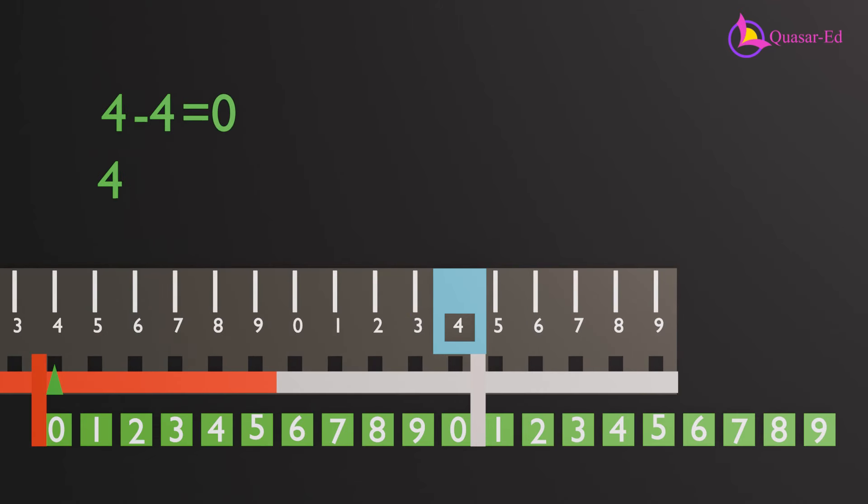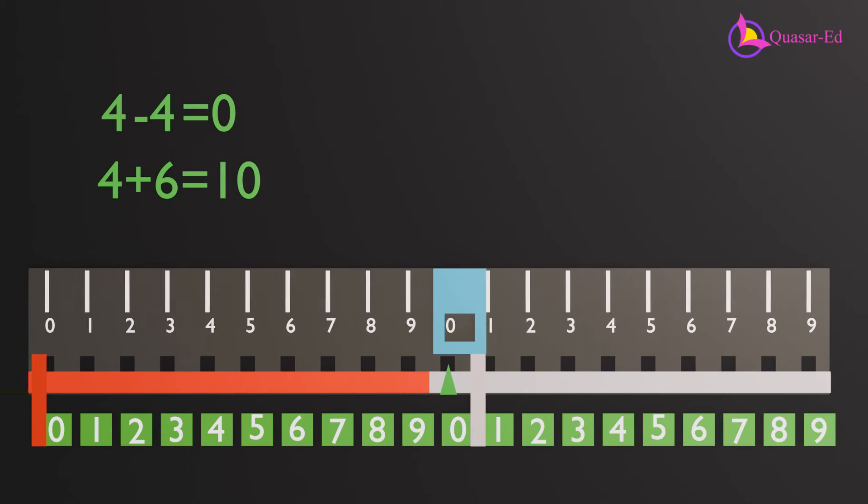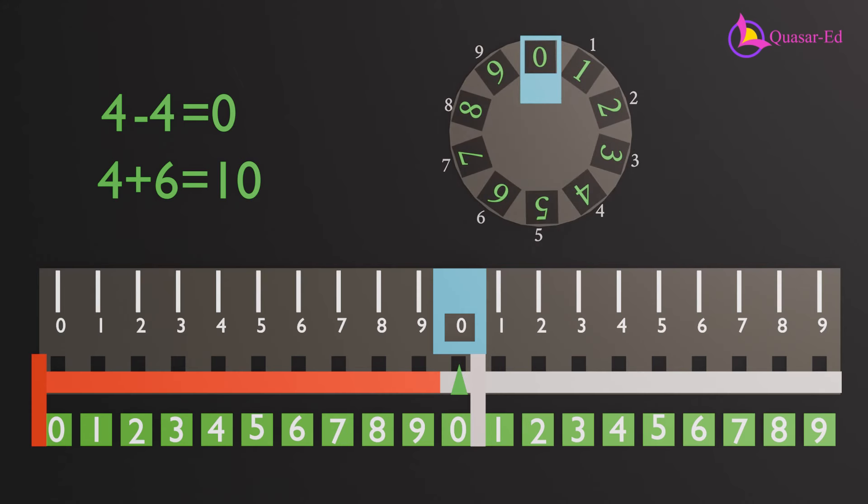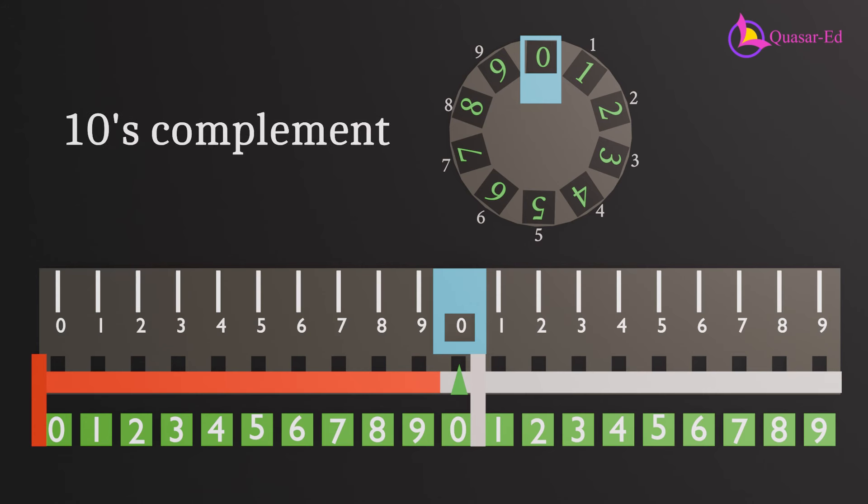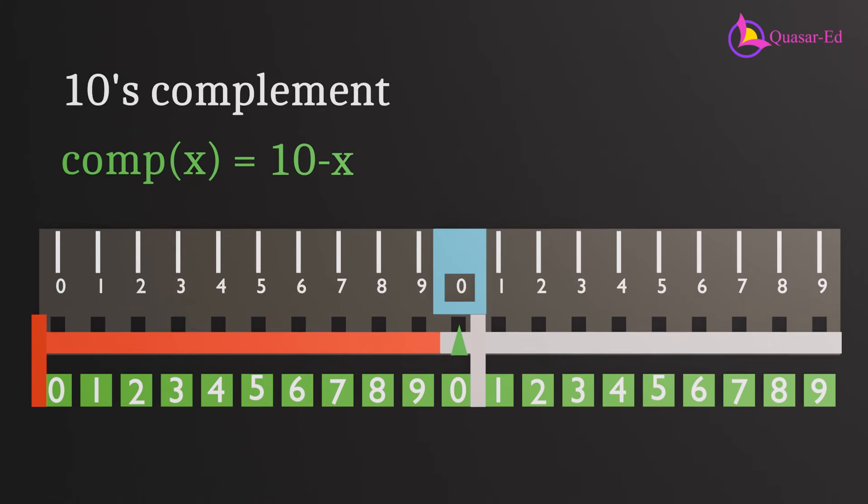For instance, if we want to subtract 4 from 4 to get 0, we add the complement of 4, which is 6. To see more clearly, you can assume this slider as a number wheel. To subtract 4, you can rotate the wheel backwards by 4 steps, which will give us 0, or you can also rotate forward by 6 steps to reach the same result. This method is known as the tens complement technique, where the complement of a number is found by subtracting it from 10.